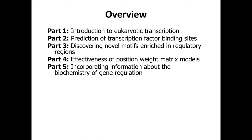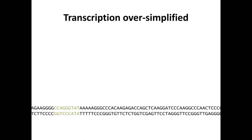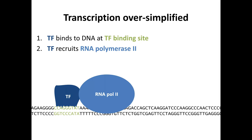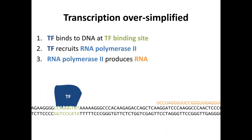We'll focus on eukaryotic transcription and then cover a number of individual topics related to it. Here's an oversimplified model of what transcription is: you have a stretch of DNA with a transcription factor binding site. The transcription factor binds to the DNA at that site, it recruits RNA polymerase 2, RNA polymerase 2 produces RNA, and downstream of that you get some function — it will change cellular activity.